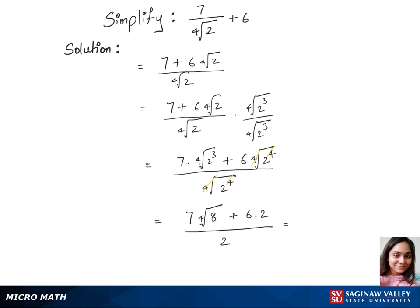Now we have 7 times 4th root of 8 plus 6 times 2 is 12 over 2. This is our final answer.